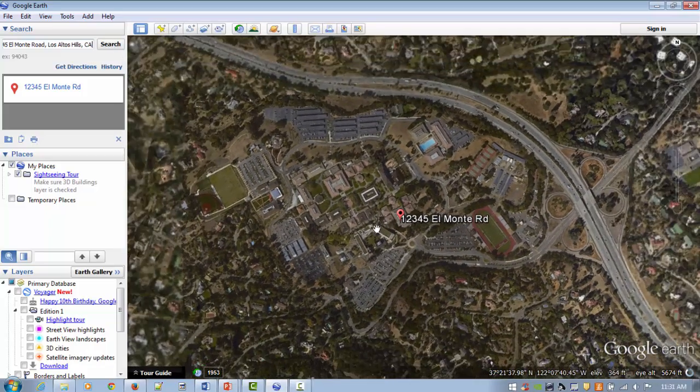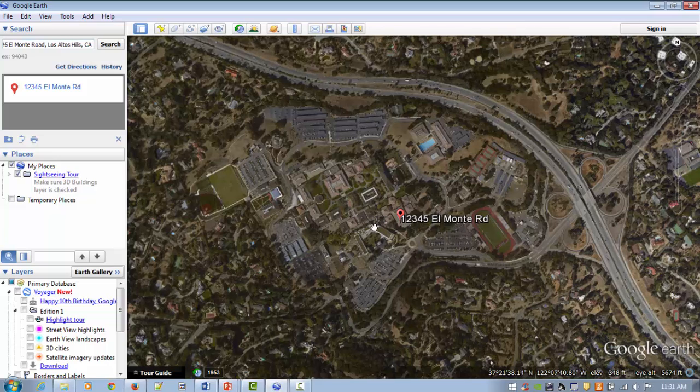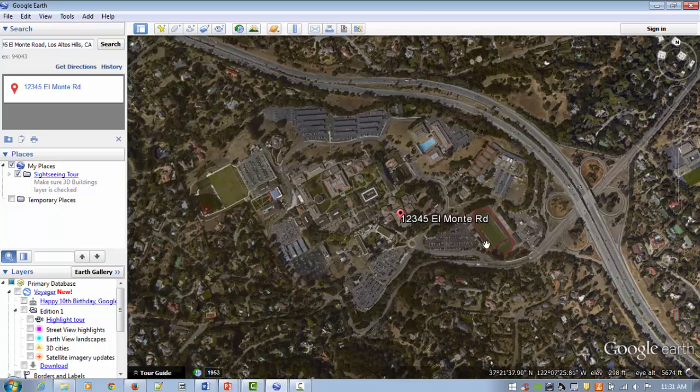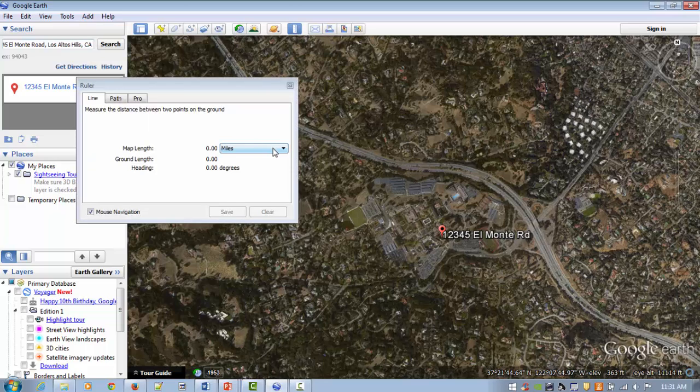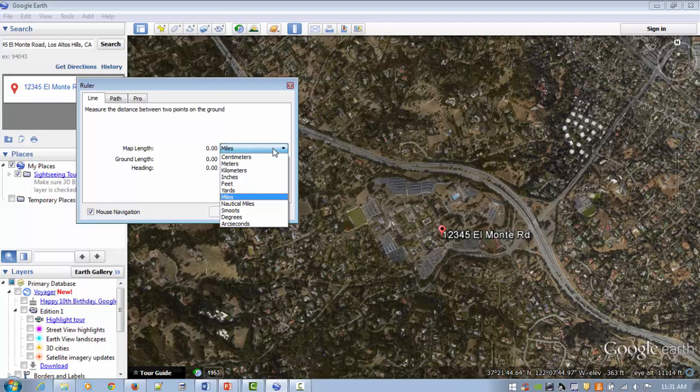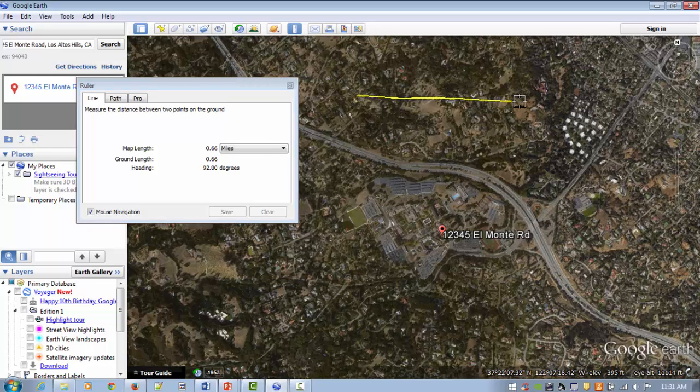So, the lab asks you to measure the distance of the Foothill College campus from east to west. So, that's basically the distance from the football stadium over here to the soccer fields and the baseball diamond over here. To use the measure tool, select the tool. It looks kind of like a ruler. Click on it, and you can select the units that you want to measure in. Miles, kilometers, smooths, arc seconds, etc. We're going to use miles. And, just click to start your measurement, and click again to end your measurement.